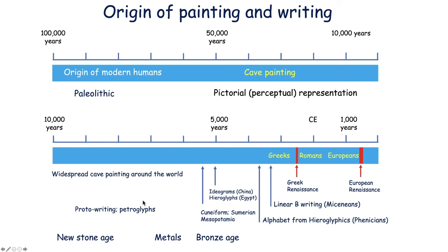We can add now the last 10,000 years from the New Stone Age, where widespread carving and painting around the world continued, and where proto-writing started with the petroglyphs. About five and a half thousand years ago, cuneiform started in Mesopotamia, and at the same time, slightly later, in China the ideograms, and in Egypt the hieroglyphs. Then the more modern kind of writing started with the alphabet, which was actually a modified form of the hieroglyphs from Egypt. The Phoenicians did that in the Middle East, and then in the Mediterranean islands the Mycenaeans started what was called Linear B writing, and since then we have the modern alphabet.